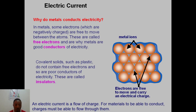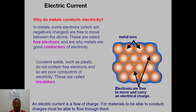Electric current is actually the flow of these electrons, or the flow of charge, in a given time. For a material to be able to conduct, charge must be able to flow through it. The flow of charge in a given time — which is the flow of electrons — is what we call electric current, or current electricity.